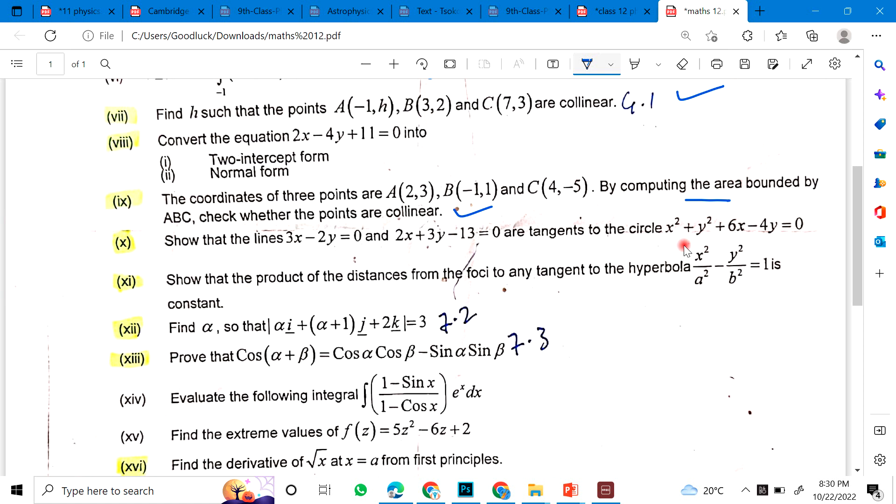After that, you have showed at the lines. These are two lines, these are tangents, this equation. After that, showed at the product of the distance from the foci to any tangent. Hyperbola is this, it's constant. Then you have to write alpha. This is an easy question, this is proof. These are four proofs: cos alpha plus beta, cos alpha minus beta, sin alpha plus beta, and sin alpha minus beta. These are all children.